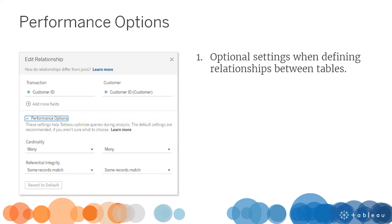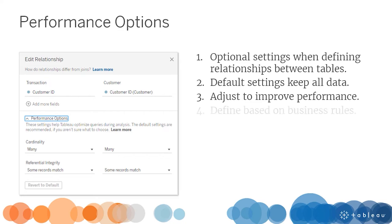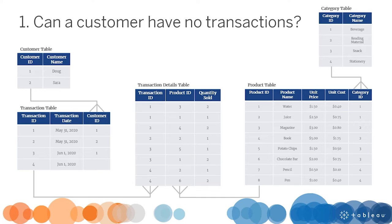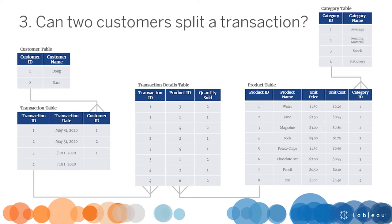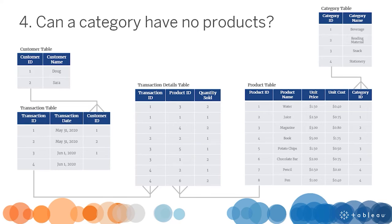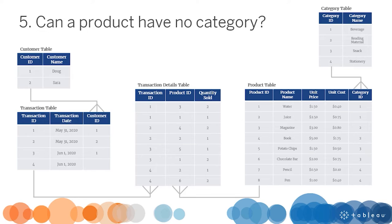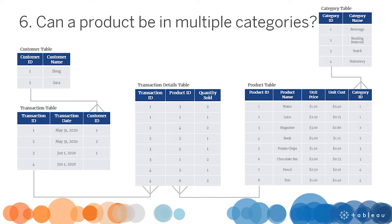Performance options are optional settings we can specify when defining relationships between tables. The default settings ensure that no data goes missing in our visualizations. We can adjust the settings to improve performance. We define the settings based on our data model diagram and our business rules. Consider the following questions: Can a customer have no transactions? Can a transaction have no customer? Can two customers split a transaction? Can a category have no products? Can a product have no category? Can a product be in multiple categories? Since Tableau Desktop cannot assume the answers, it must consider all of these options to be valid. Let's define our business rules to maximize query performance.